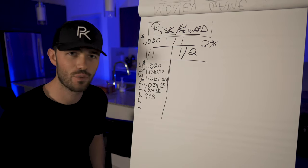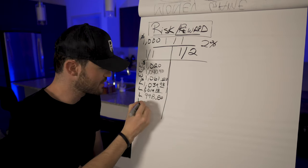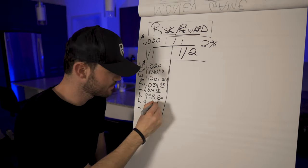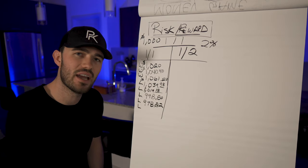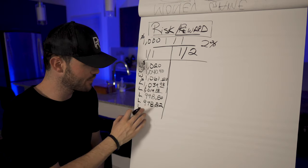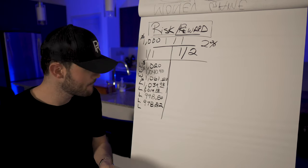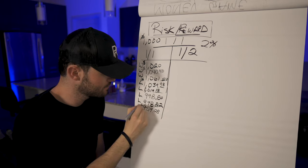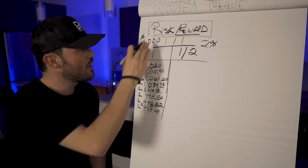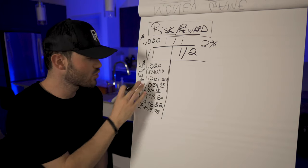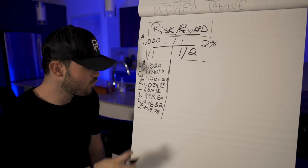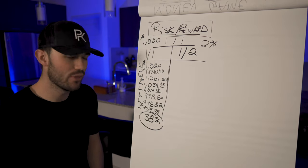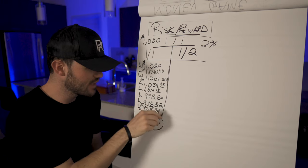The fourth loss leaves us with nine hundred seventy-eight dollars and eighty-two cents. After the fifth consecutive loss — eight total trades — we are left with nine hundred fifty-nine dollars and twenty-eight cents. So on a one-to-one ratio with three wins and five losses, roughly a 38% win rate, we are not making money.